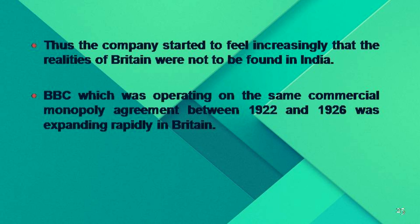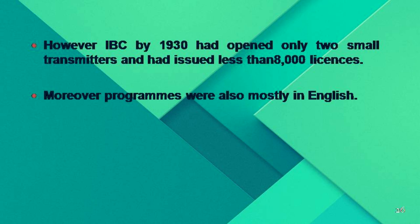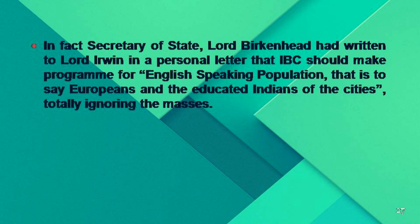The company could not sell as many licenses as expected — only 3,594 licenses were issued by the end of 1927. India's geographical reality came in the way, as transmission was a problem given its vast size and lack of electricity across all regions. The company started to feel that the realities of Britain were not to be found in India. BBC, operating on the same commercial monopoly agreement between 1922 and 1926, was expanding rapidly in Britain, but in India there were problems to be faced.